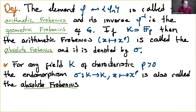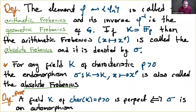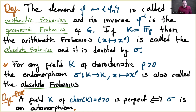In general, this endomorphism σ: x ↦ x^p is just an endomorphism, not necessarily an automorphism. When I have a field of characteristic p, we say the field is perfect if exactly when σ is an automorphism. This is a proposition — there are equivalent definitions of perfect field, but in the case of characteristic p > 0, this is equivalent to saying the Frobenius is an automorphism.